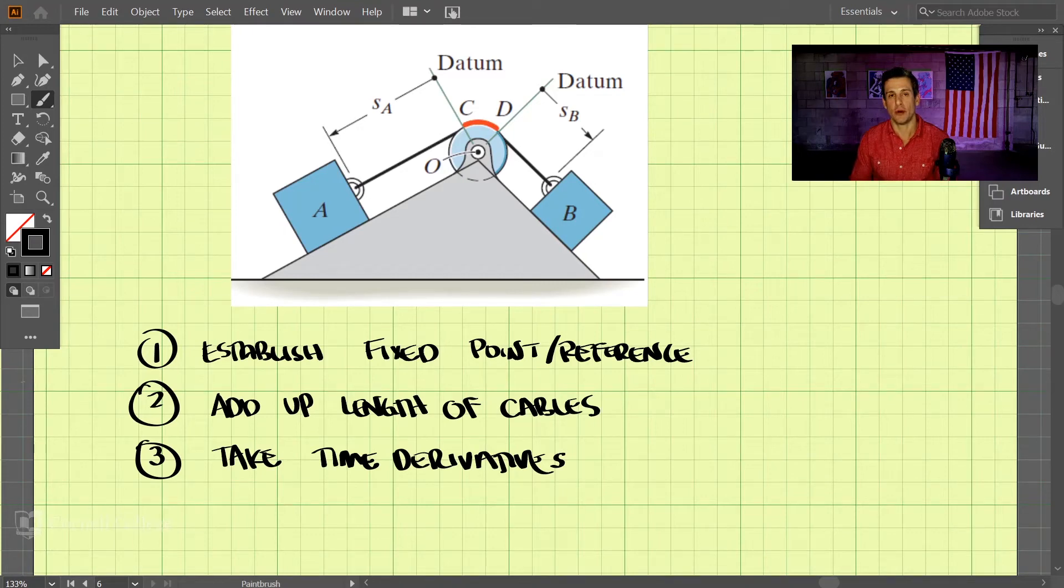We will now look into dependent motion. Dependent motion is the analysis when one particle or one object in a system depends on the motion of another object.